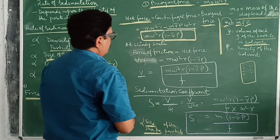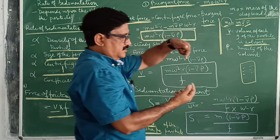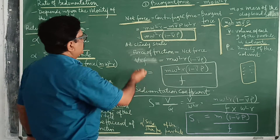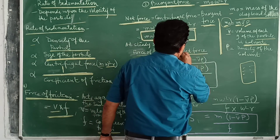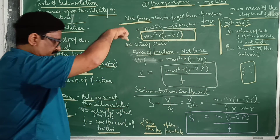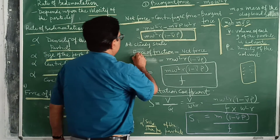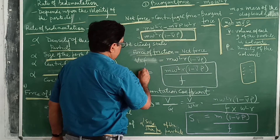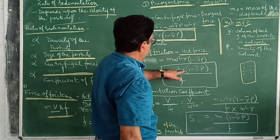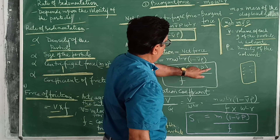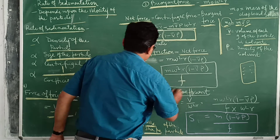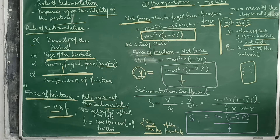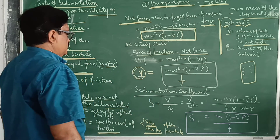At steady state, when the net force and the force of friction are equal to each other, the particle moves with a uniform velocity v. Setting the frictional force equal to the net force gives: v = m·ω²·r·(1 − v̄ρ) / f. This equation determines the velocity of a particle moving during sedimentation.